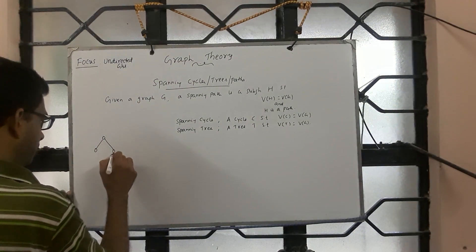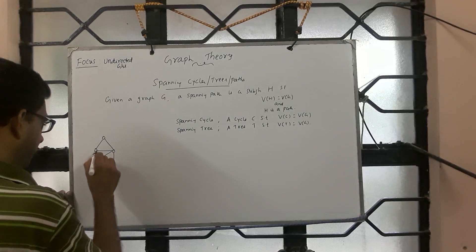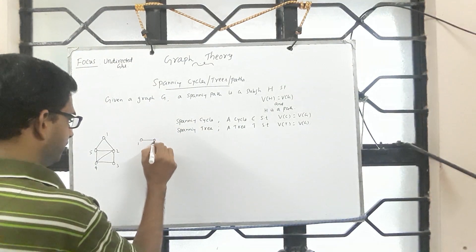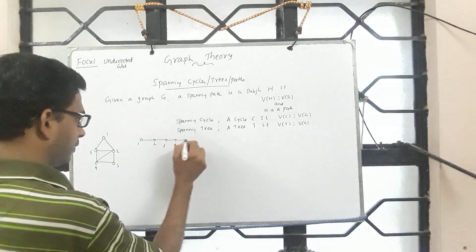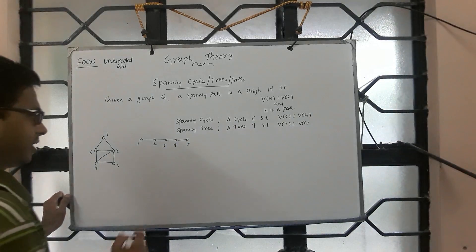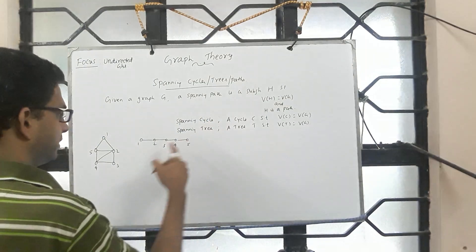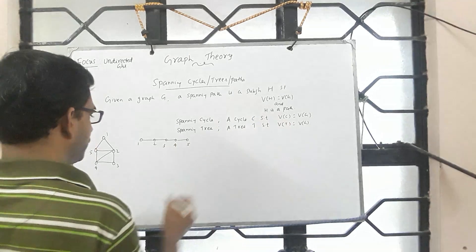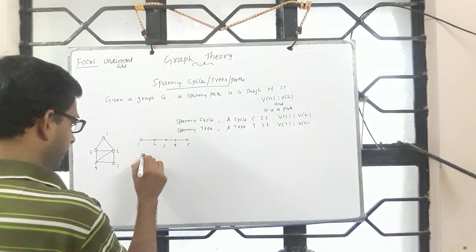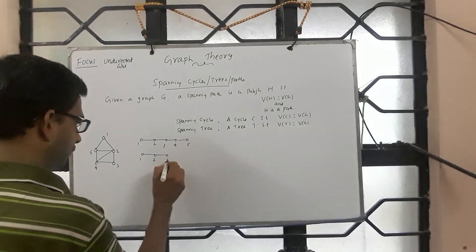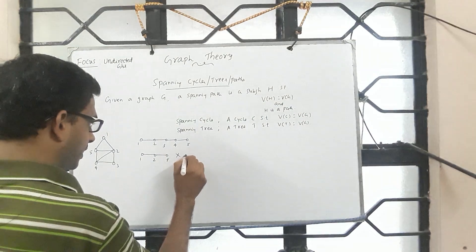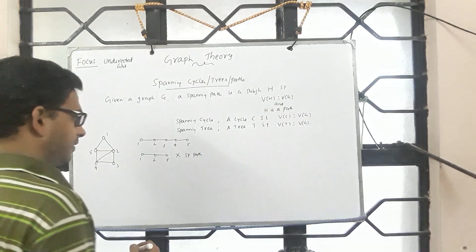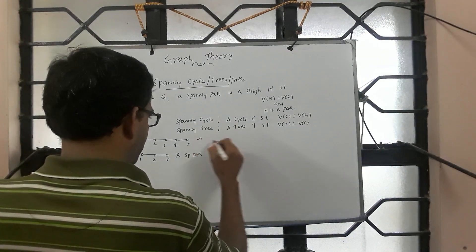Now let us look at a couple of examples to understand things better. Take vertices 1, 2, 3, 4, and 5. You can see that a subgraph H where V of H equals all five vertices and H is a path — that is a spanning path. But a path on just 1, 2, 5 is not a spanning path, since it does not span all of V of G.